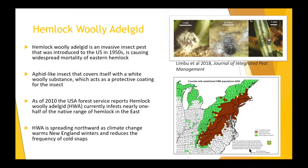The hemlock woolly adelgid is a relatively unique insect species that covers itself with a white woolly substance, which acts as a protective coating for the insects. On the upper right-hand side is a graphic with different close-up, zoomed-in photos showing the woolly substance that surrounds the insect, as well as one that's potentially not as mature, and a male version of the woolly adelgid.